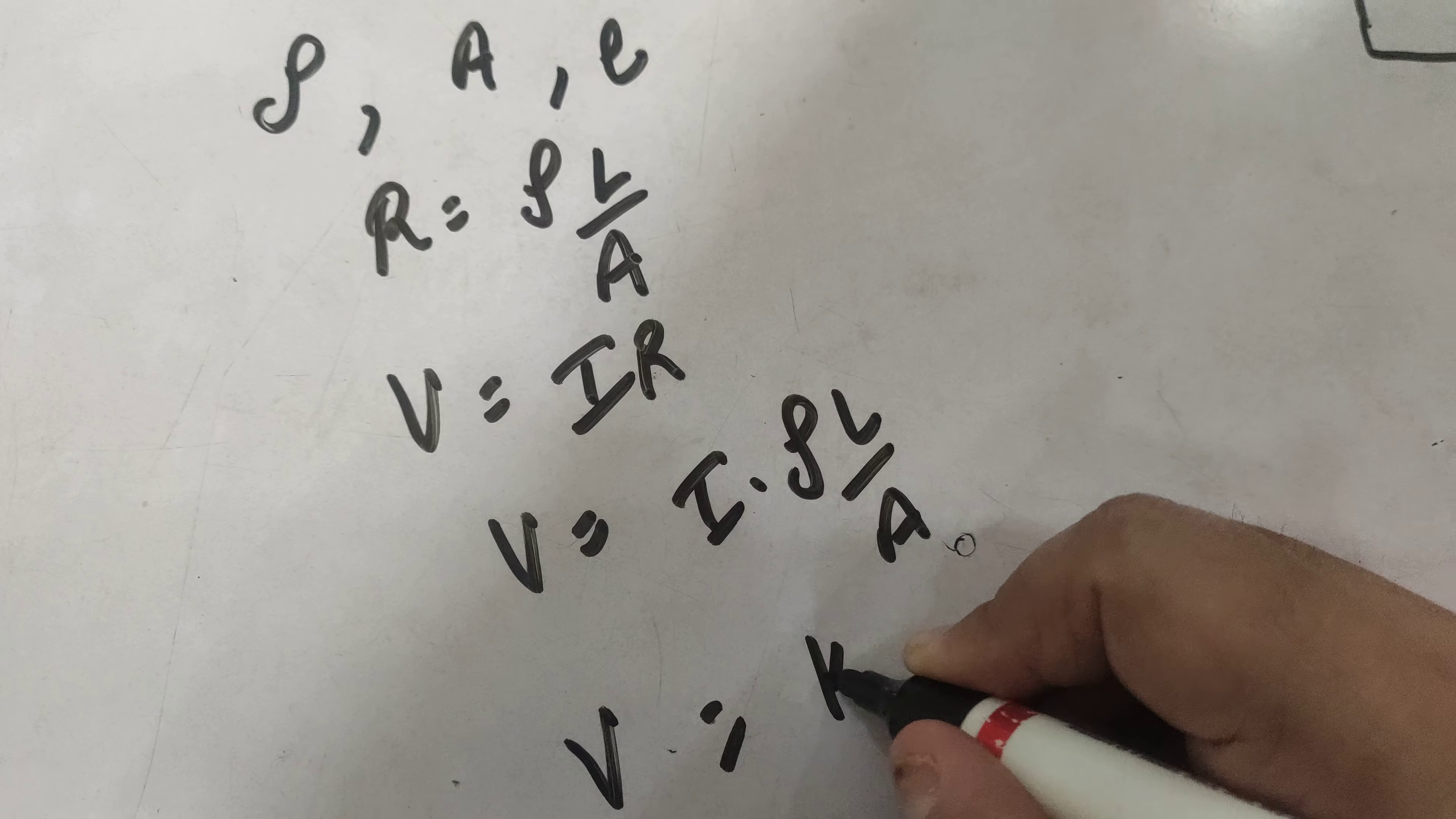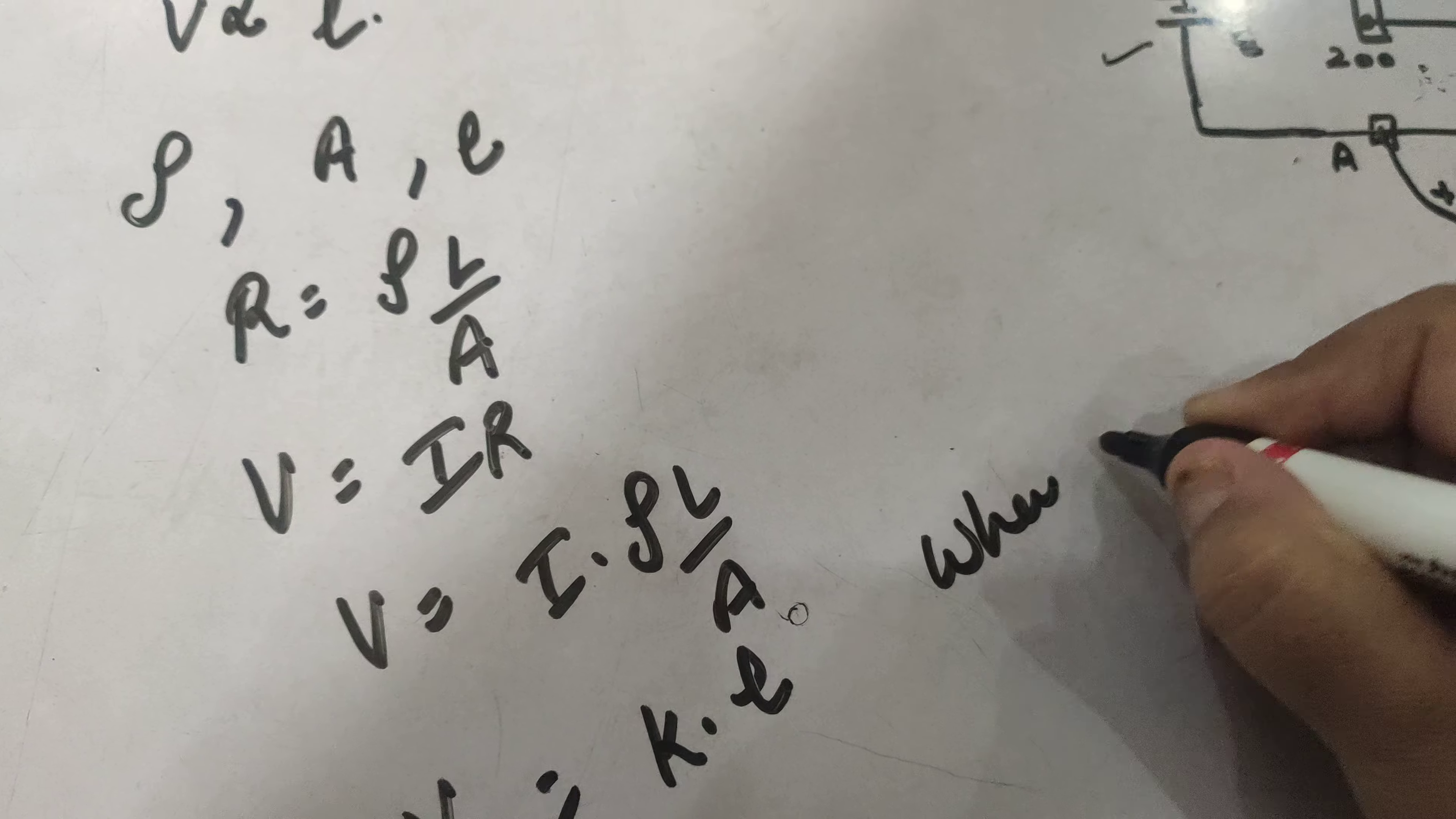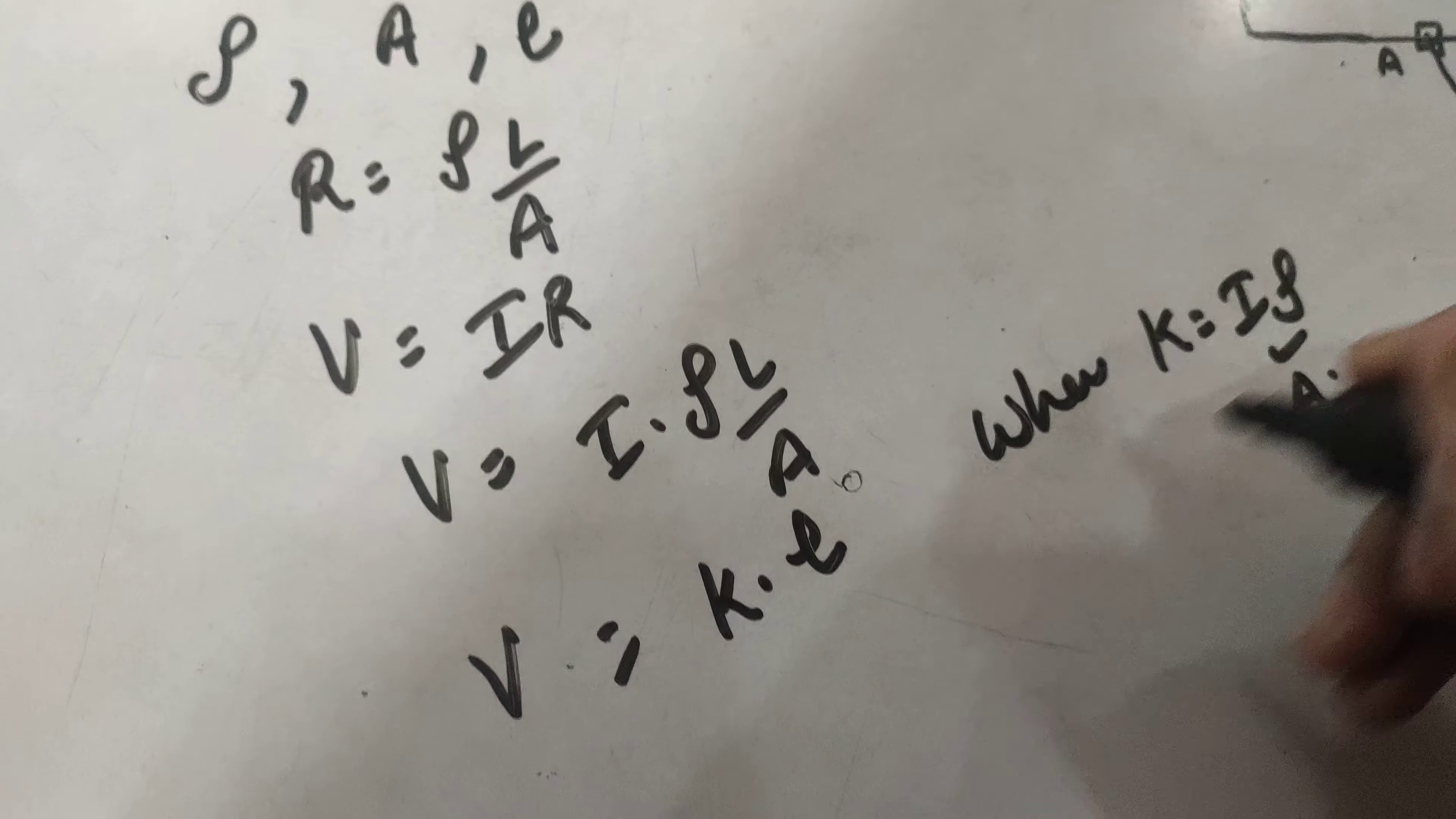We can write V is equal to K into L, where K is equal to I rho upon A, which is constant.